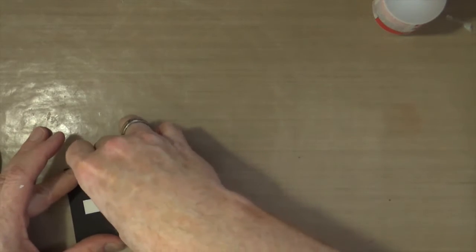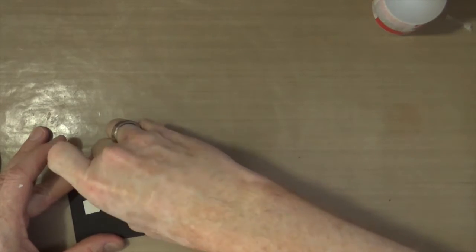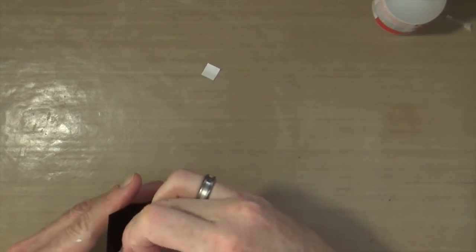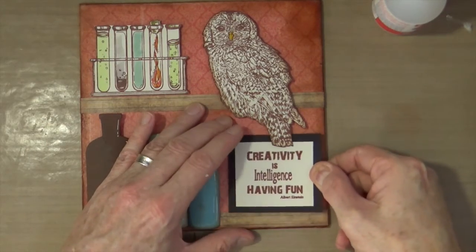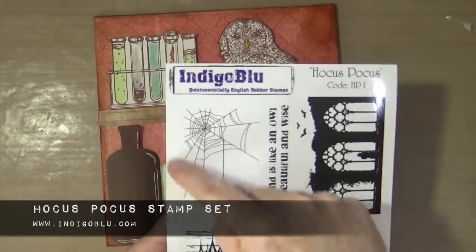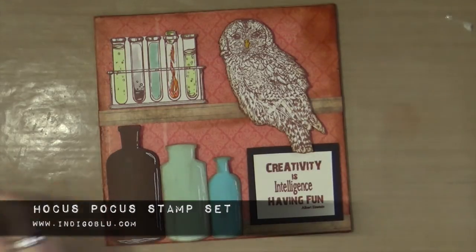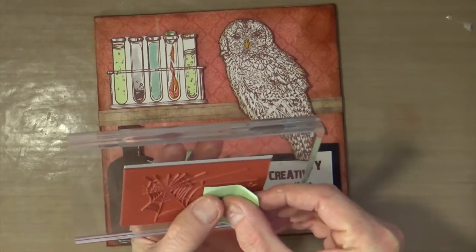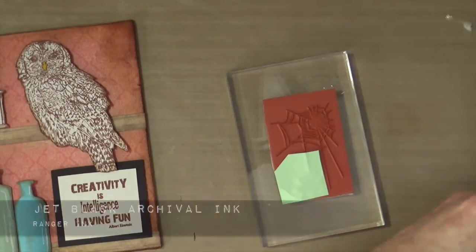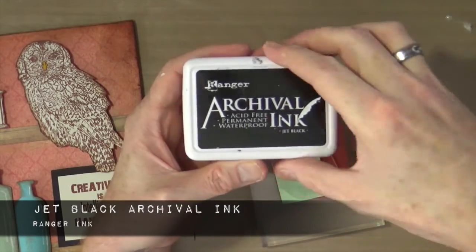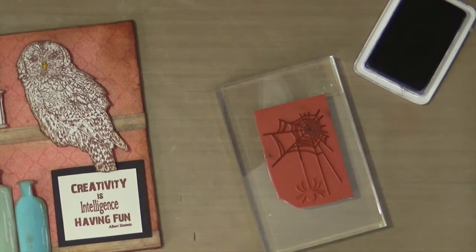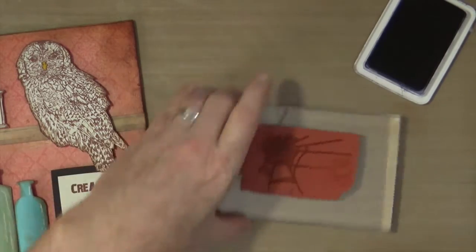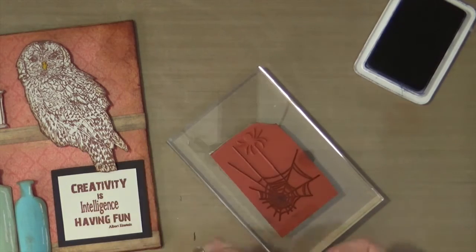As with other elements, I'm popping foam pads onto the back, then sticking it onto my canvas. Now I'm bringing out the Hocus Pocus stamp set. I'm using the spider's web stamp from that set, masking off the spider because I just want the web. Using jet black archival ink, I'm stamping that in the top right corner of the canvas to give it more of a Halloween theme.